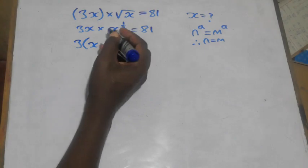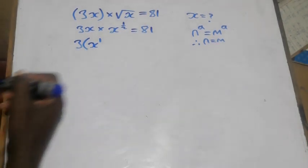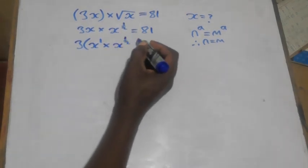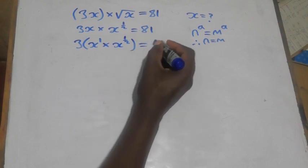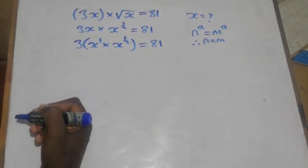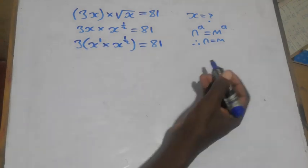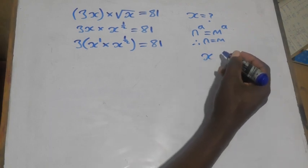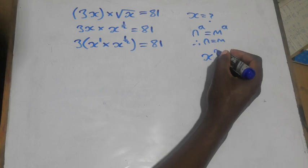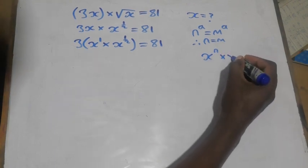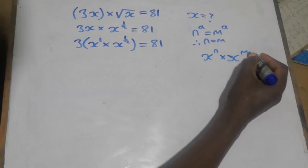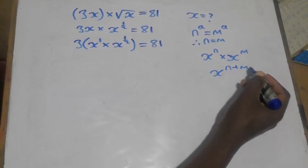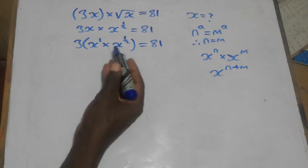At this stage, since we are dealing with powers, this x has an invisible power of 1, so we write it as x to the power 1. We then apply the rule of indices: x to the power n times x to the power m — same base — we add the powers, giving x to the power n plus m.